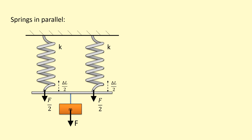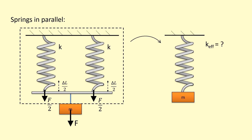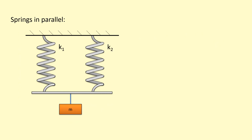So the extension of each spring will be half compared to if the mass had just been hanging on one spring. To simplify, I'll treat the two springs as one system and ask: what would the effective spring constant be? The extension is only half the original, so this system is twice as stiff — the effective spring constant is 2k. When you have springs in parallel, you simply add the spring constants. With three springs in parallel, you add all the spring constants to get the effective spring constant.